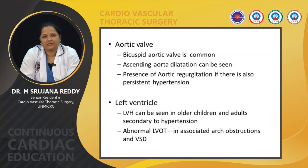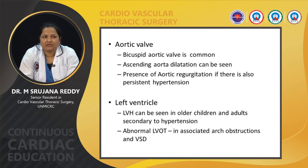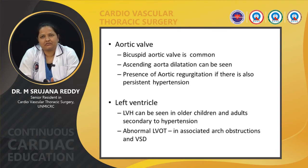Aortic valve abnormalities can also be associated with coarctation of aorta. The most common association is bicuspid aortic valve, secondary to which there can be ascending aorta dilatation. It has been found that this dilatation is more pronounced in association with coarctation compared to an isolated bicuspid aortic valve.